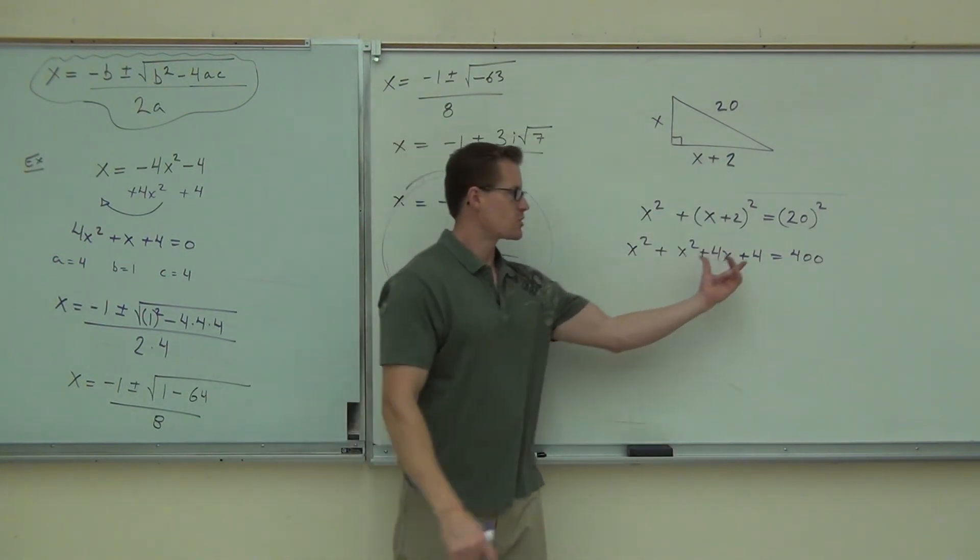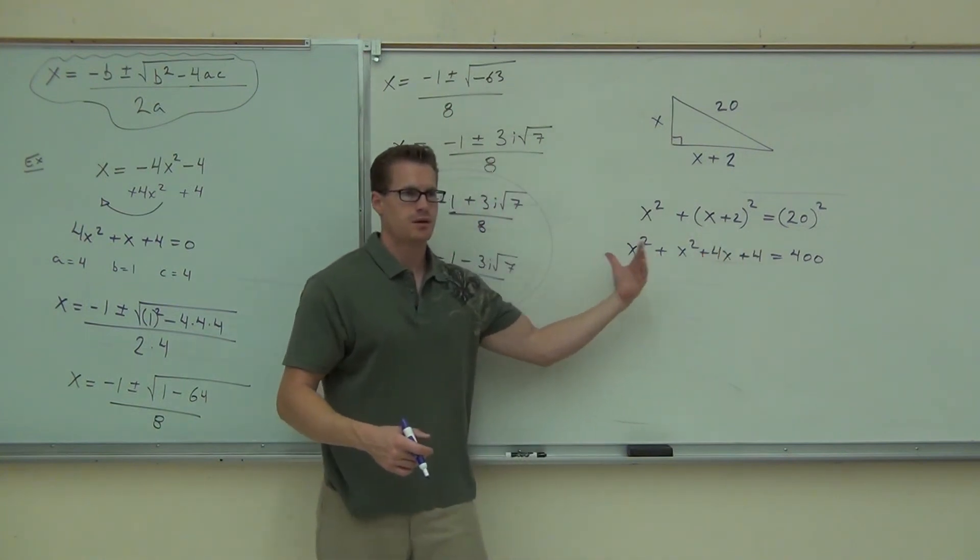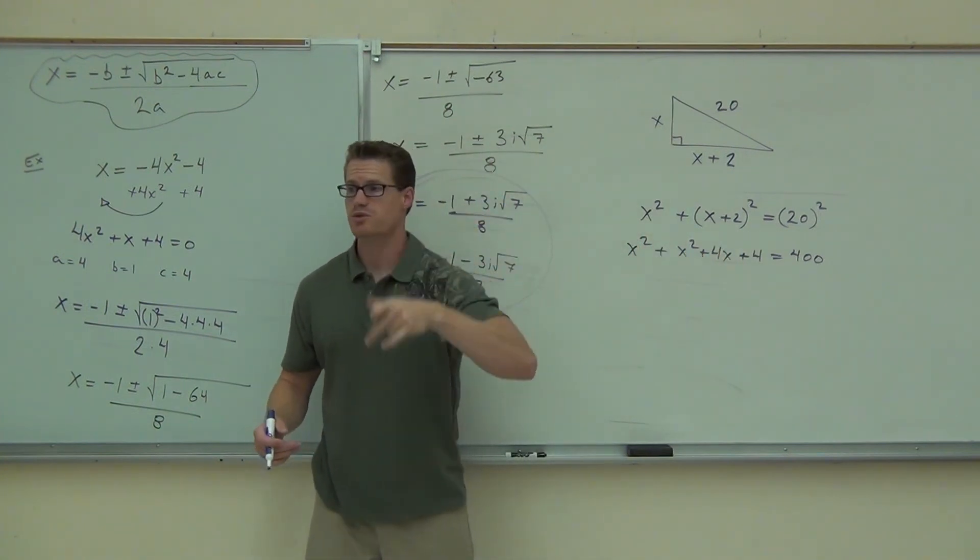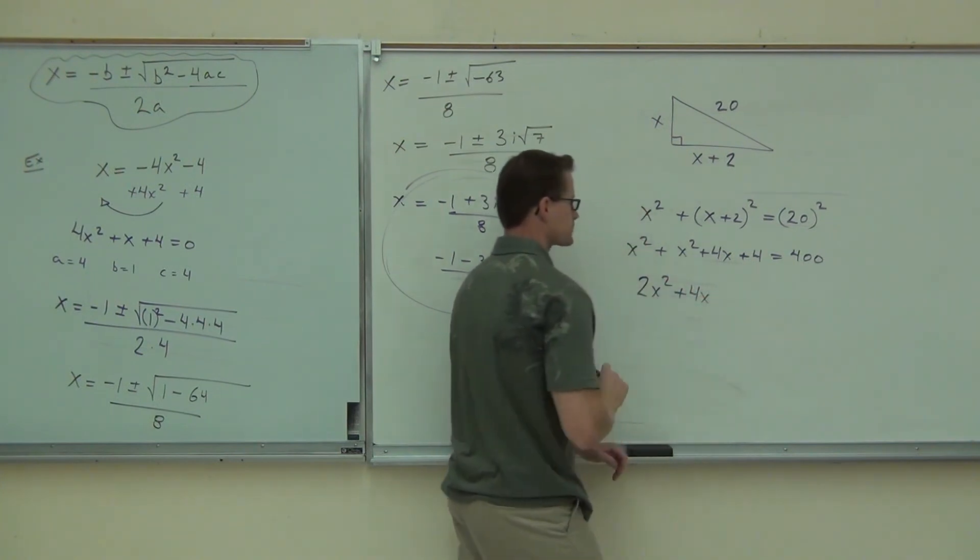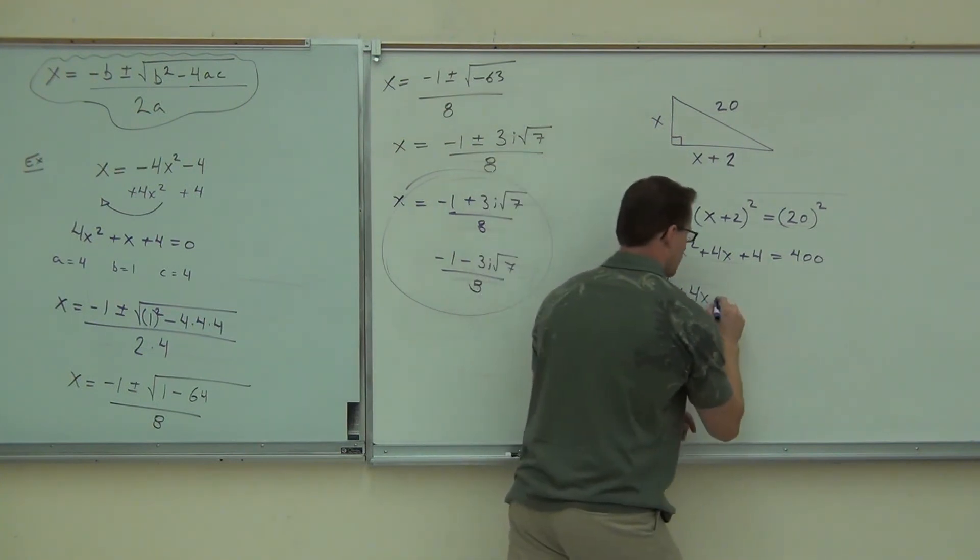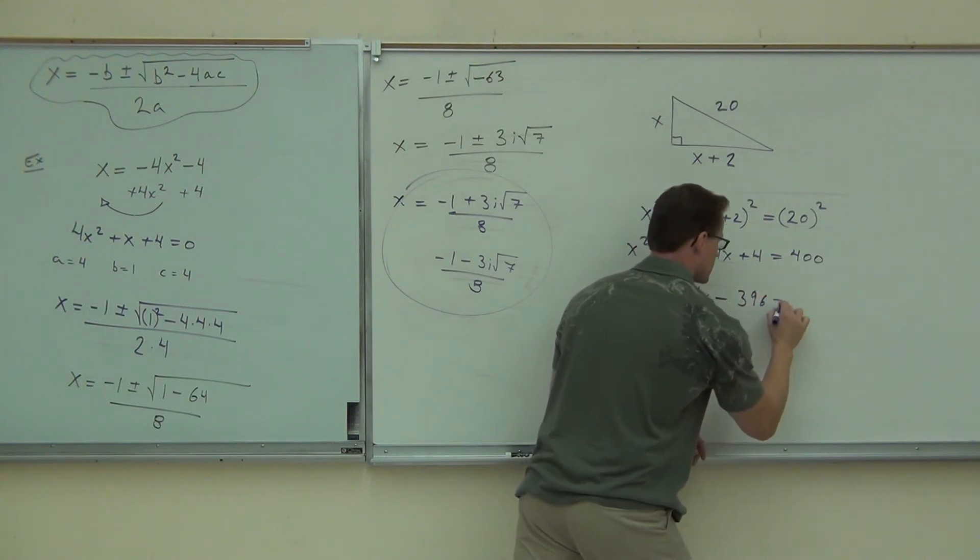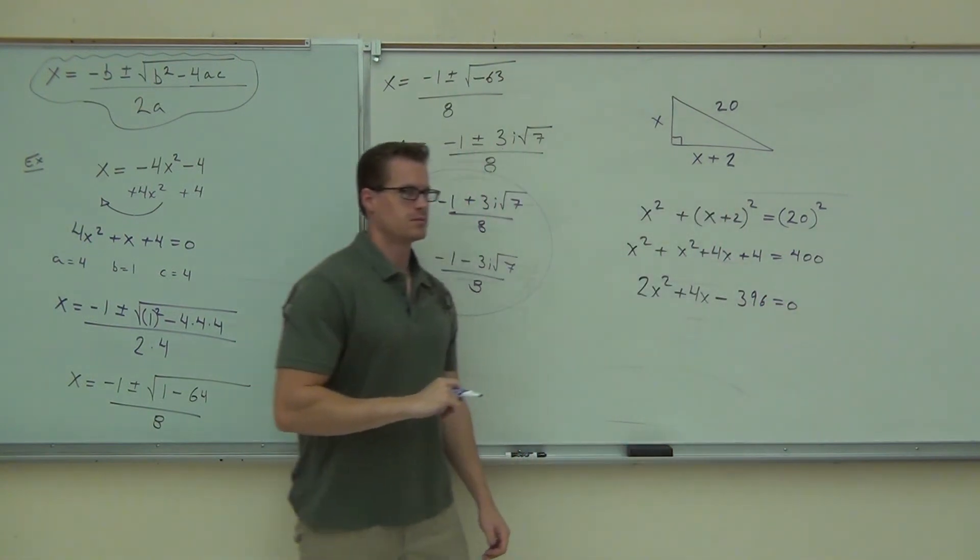Combine like terms. Combine like terms and get everything to one side. You need a 0 to use a quadratic formula. So, we'd have 2X squared plus 4X minus 396 equals 0. Yes, no?